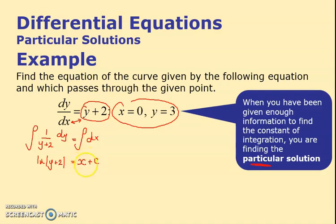And that becomes log of the bottom which is y plus 2 equals x plus a constant. And I've shown you that you can write this as y plus 2 equals e to the x plus c. But we prefer to write that as y plus 2 equals a times e to the x. And I showed you last time but I'll just do it again.